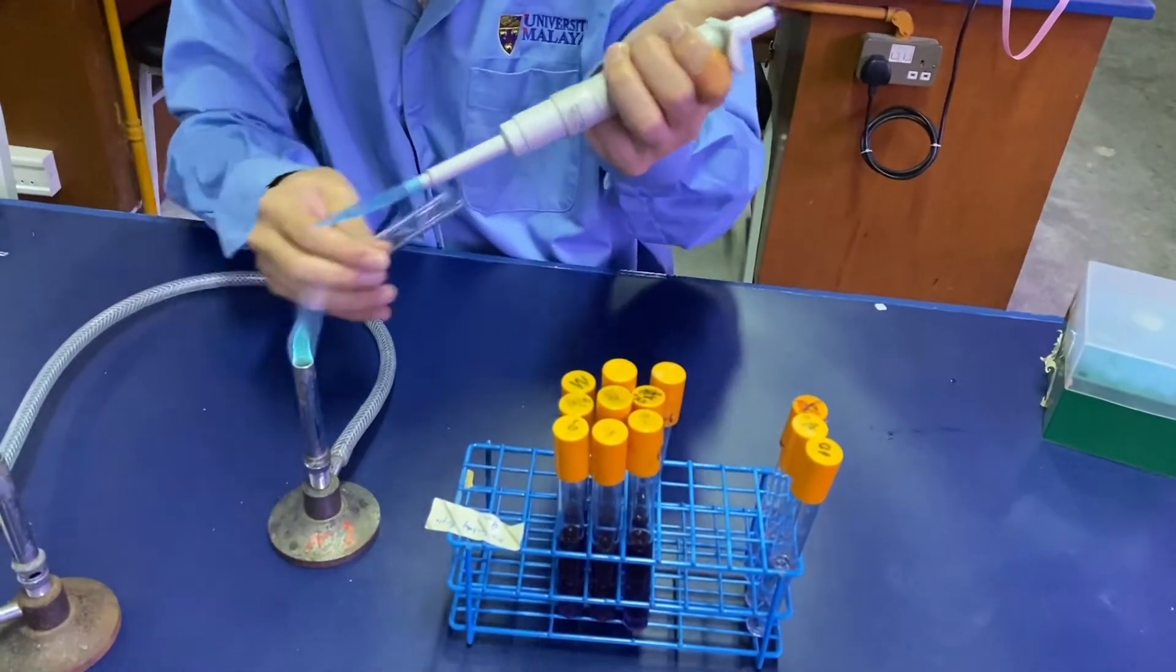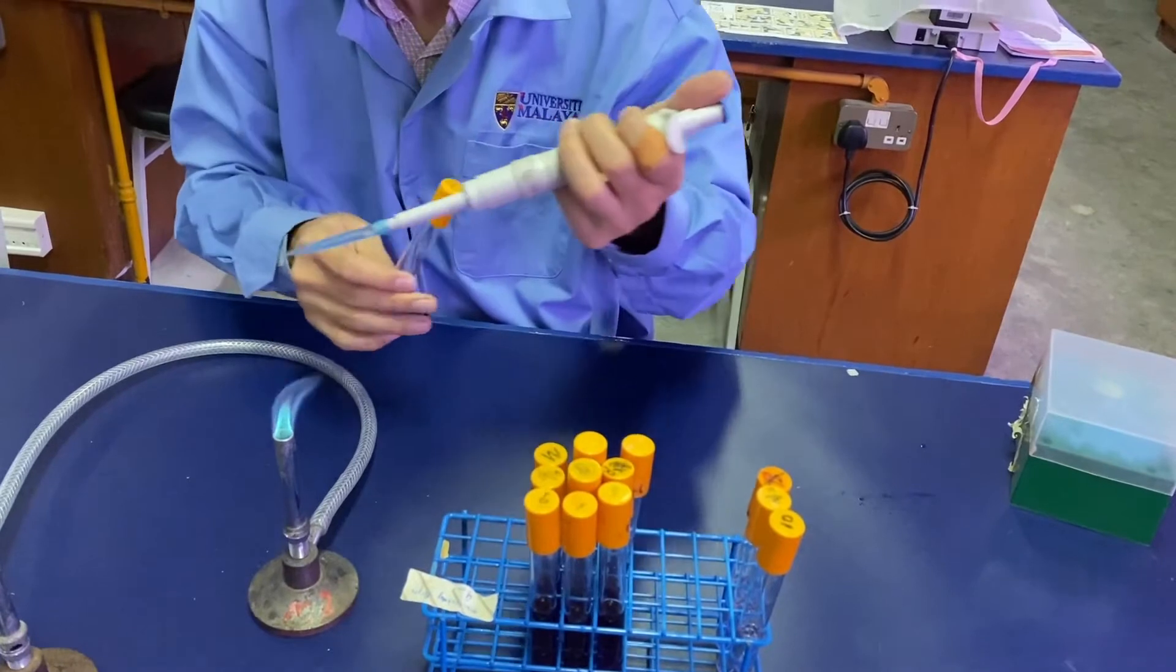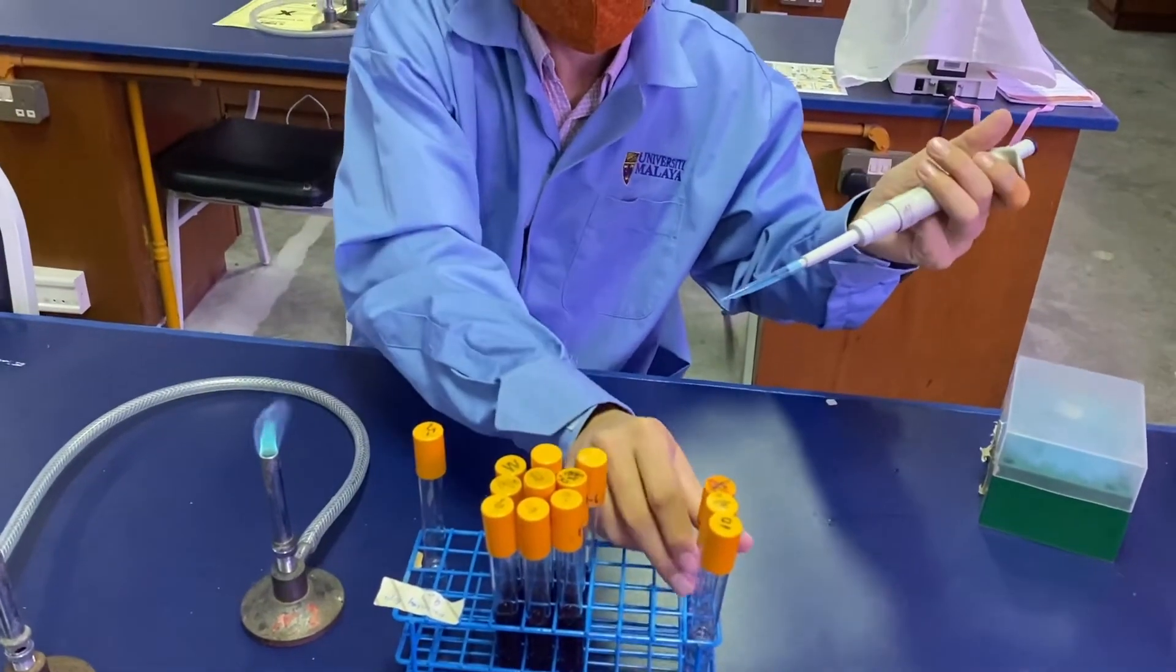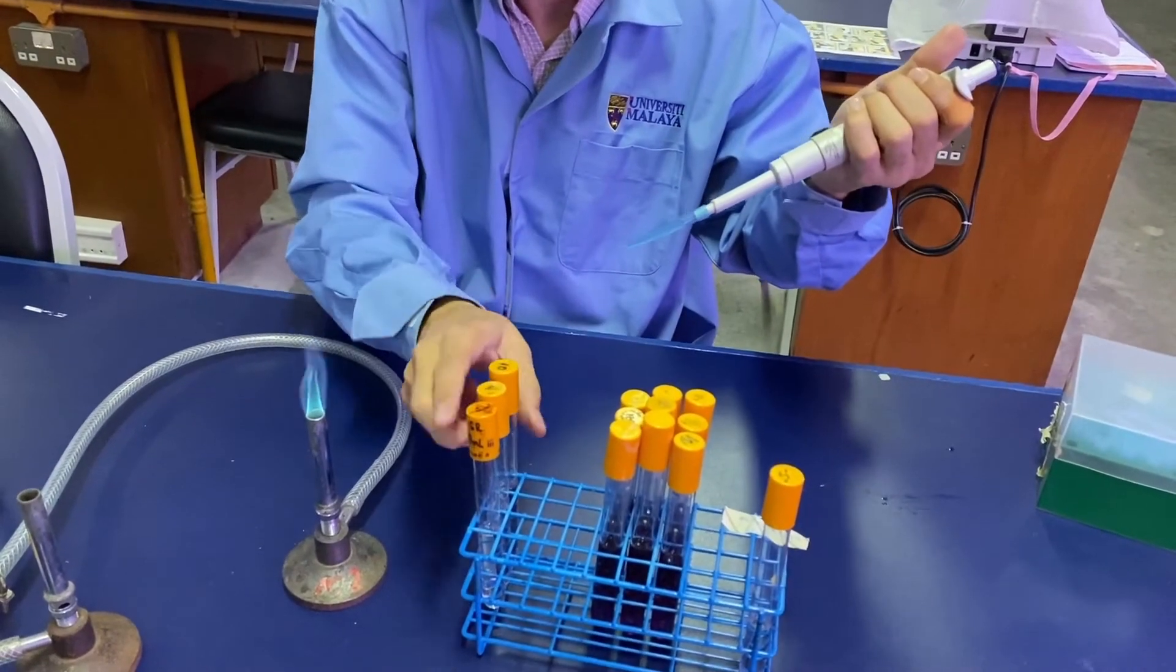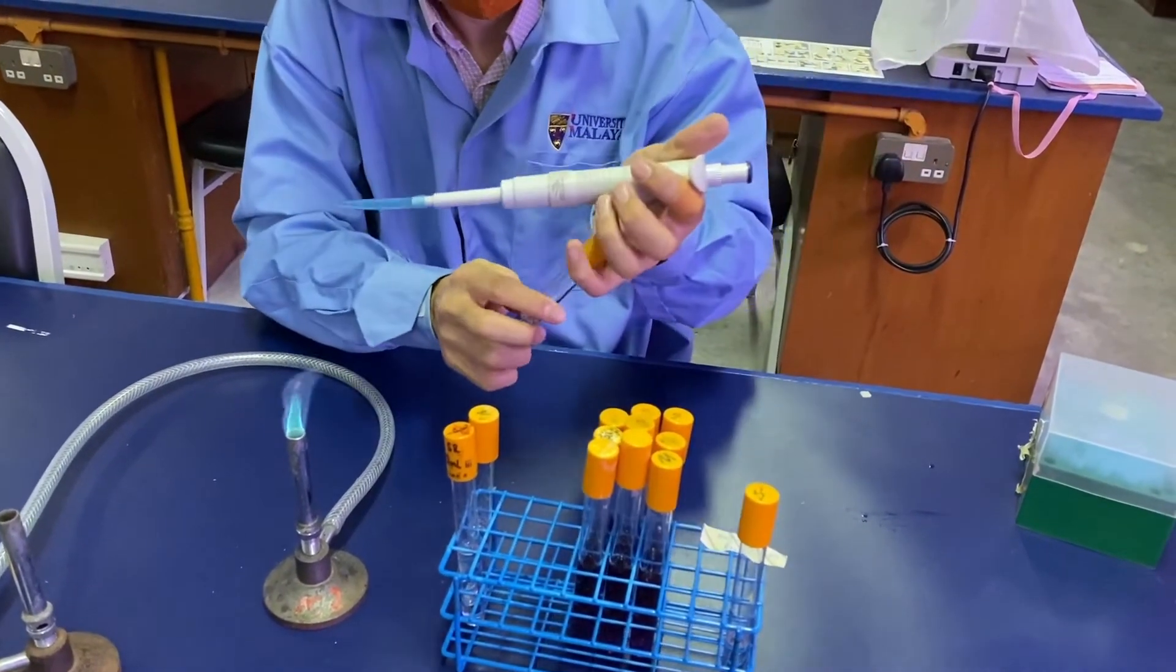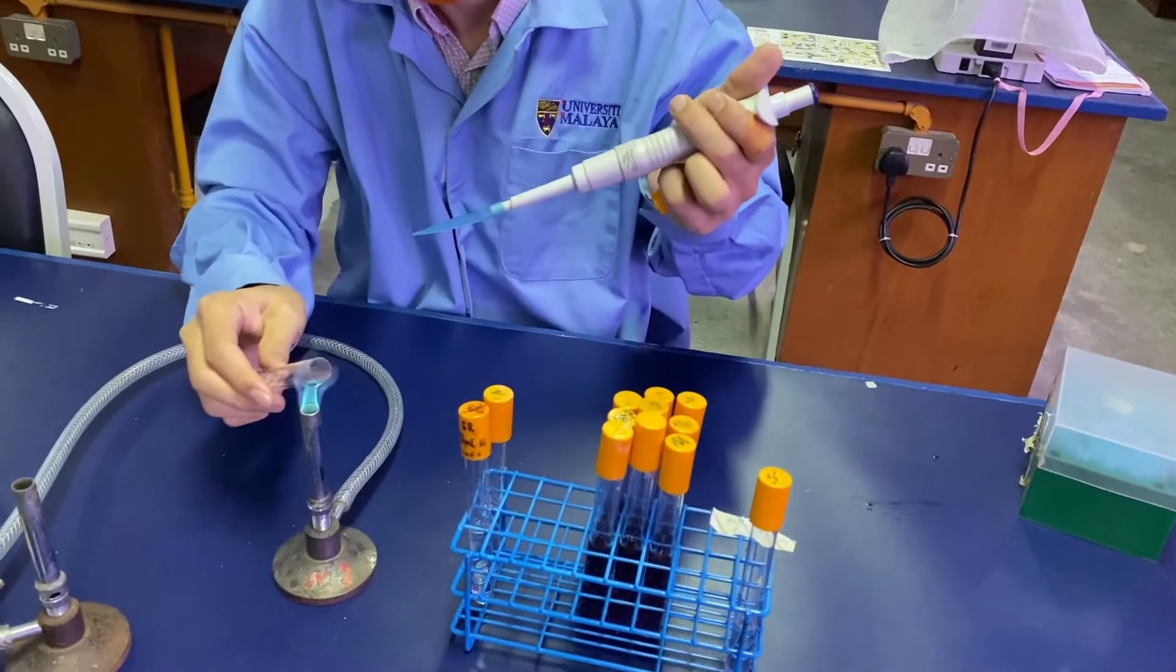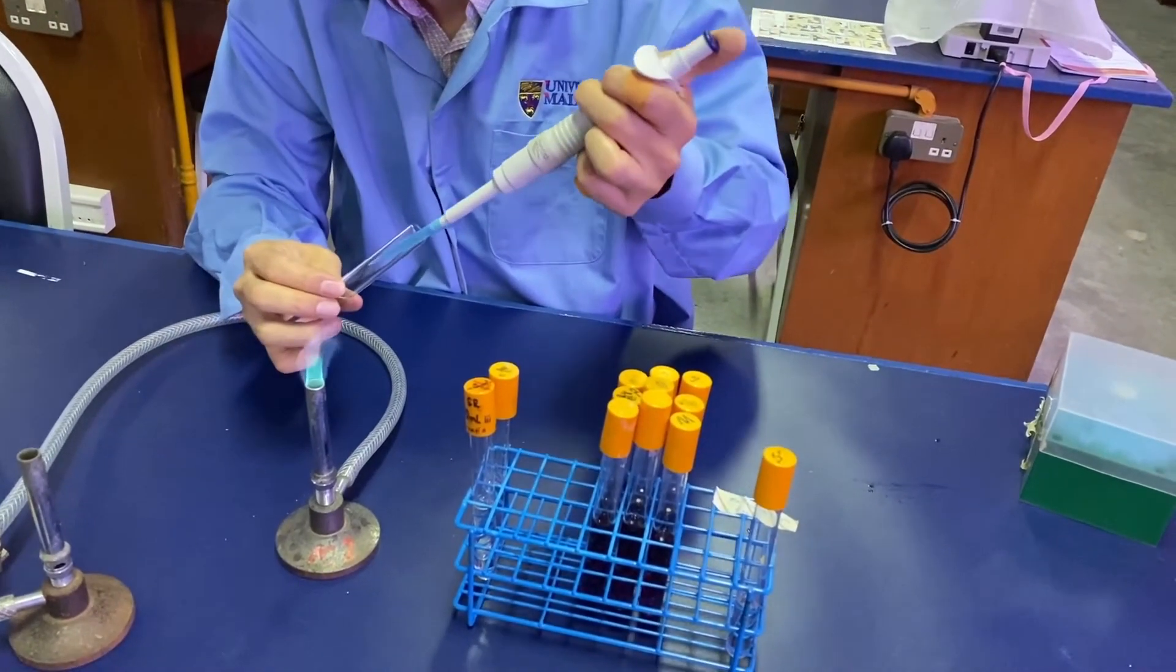We always flame the mouth of the test tube to expand the air there, so that no contamination from the surrounding air goes into the tube. We'll start with the minus one tube.